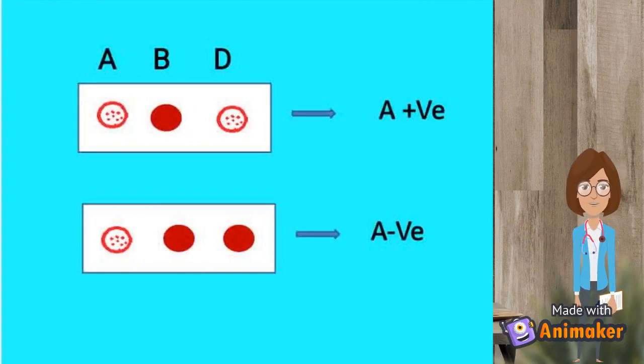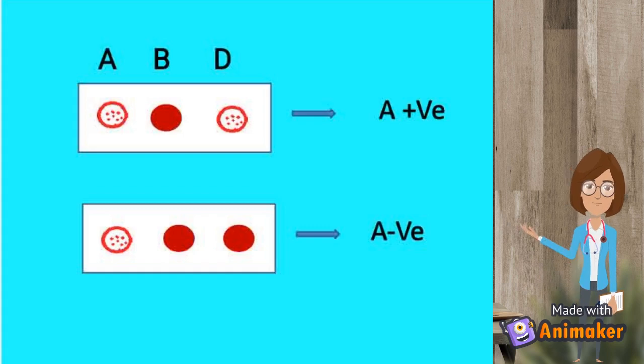In the first slide, clumping is seen in A and D, hence we can say it is A positive. In the second slide, clumping is seen in only A, thus it is A negative.